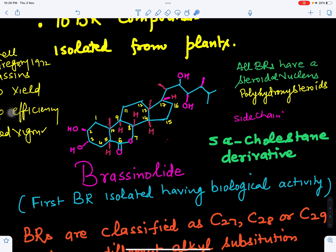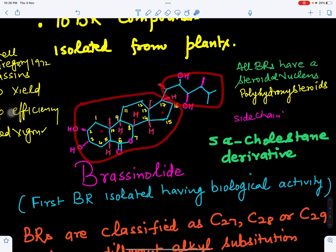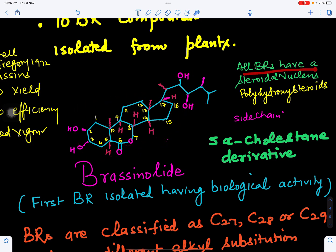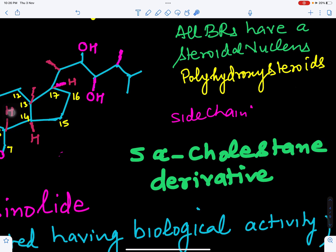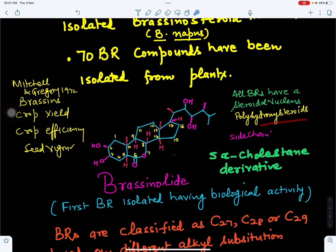Regarding their structure, brassinosteroids resemble steroids. Steroids have three cyclohexane rings and one cyclopentane ring — this area is called the nucleus. Brassinolide has the same nucleus and a side chain. All brassinosteroids have a steroidal nucleus. Because they have hydroxyl groups at many positions, they are called polyhydroxy steroids. Brassinolide is also called a 5-alpha cholestane derivative.